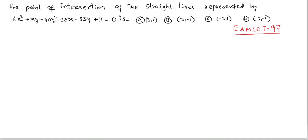The point of intersection of the straight lines represented by 6x² + xy - 40y² - 35x - 83y + 11 = 0 is to be found. Options: (3,1), (3,-1), (-3,1), (-3,-1). Take the linear part: -35x - 83y, multiplied by the constant 2 giving 22.